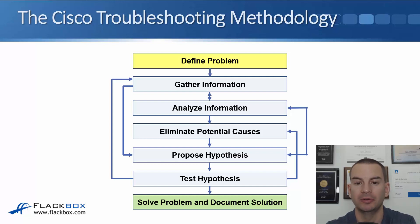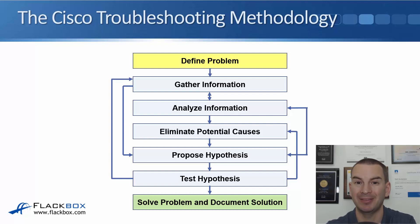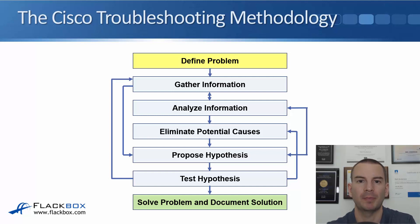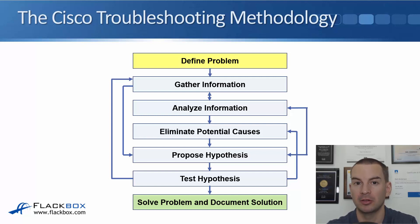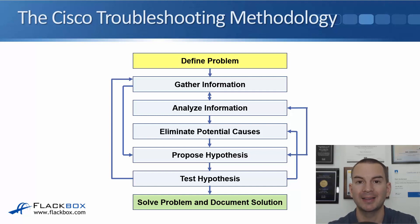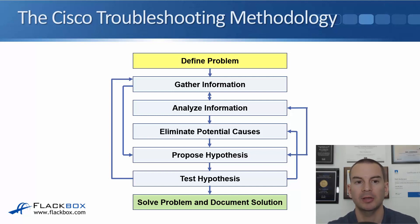That's the standard way to troubleshoot from start to end, but you'll notice there are other arrows going in different directions. Sometimes you can move straight from the gather information stage to propose hypothesis — if it's a problem you've seen before and you're confident it's the same thing, just put in your solution and see if it works. Also, you can often move back to an earlier stage if you don't manage to fix the problem the way you thought.